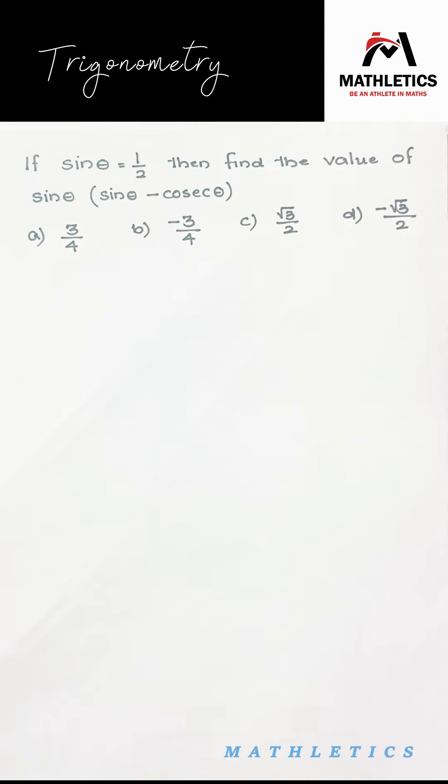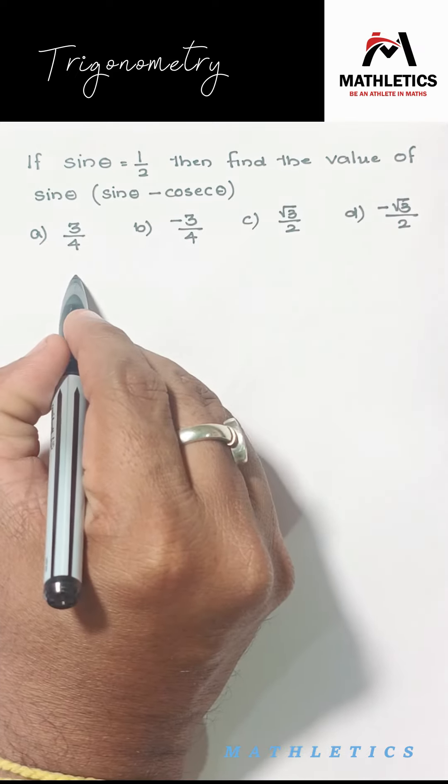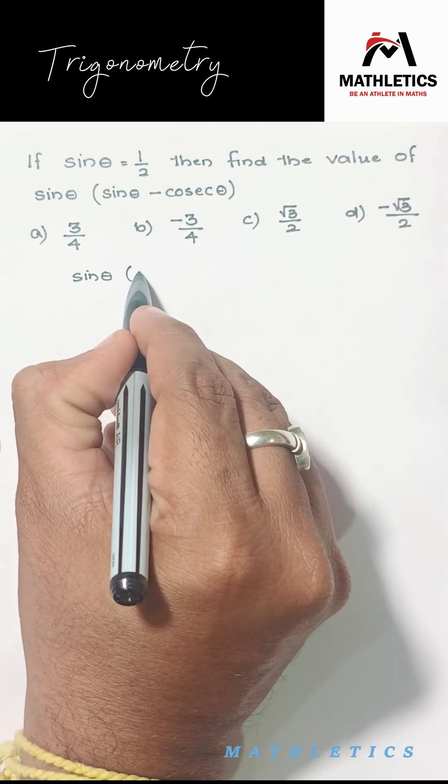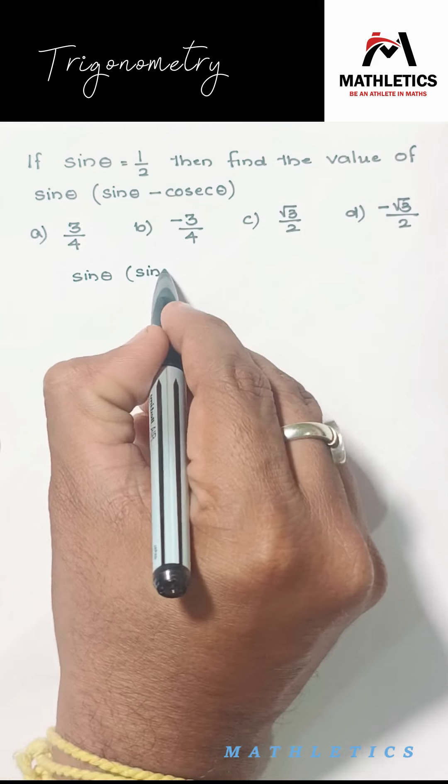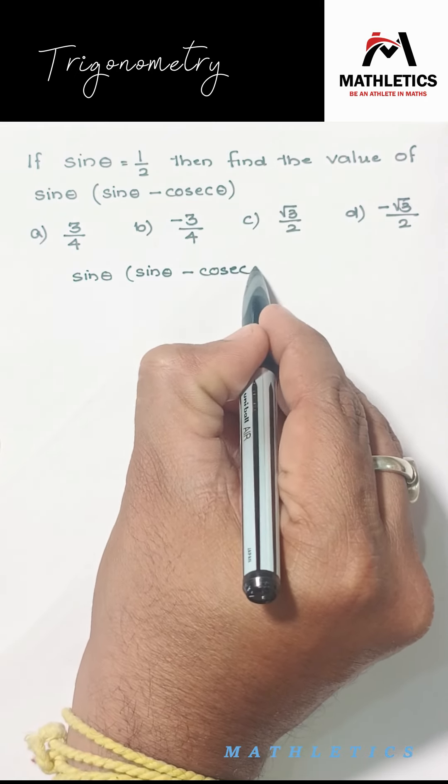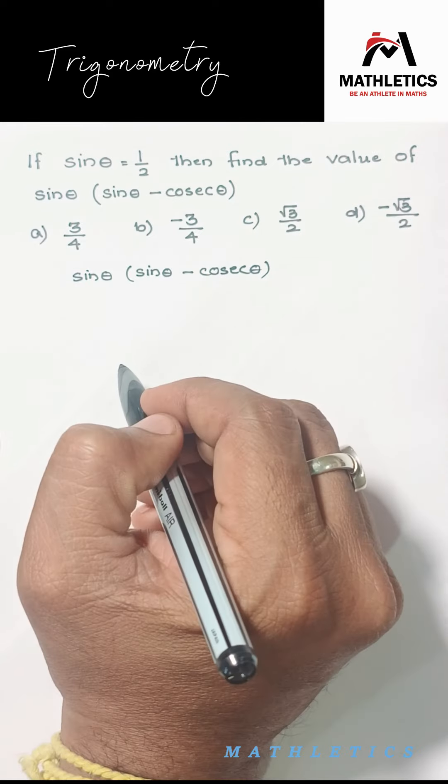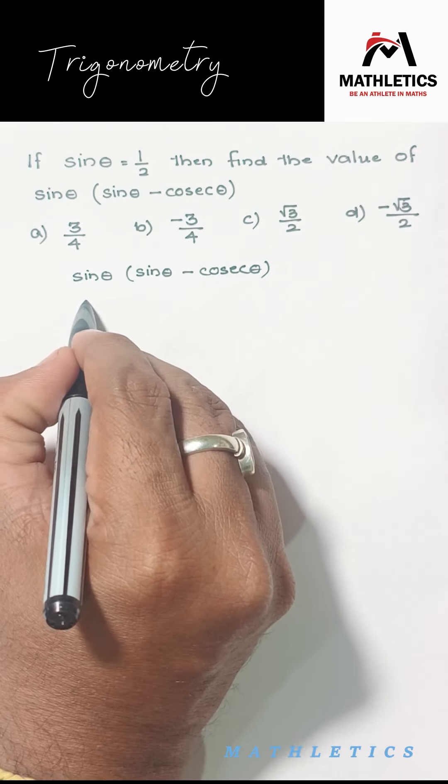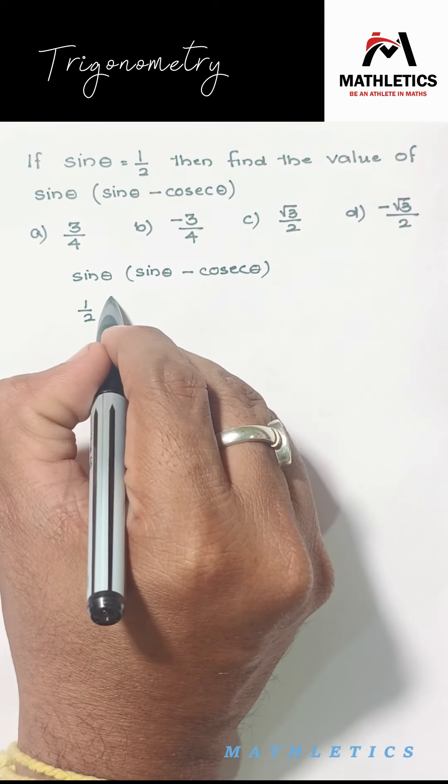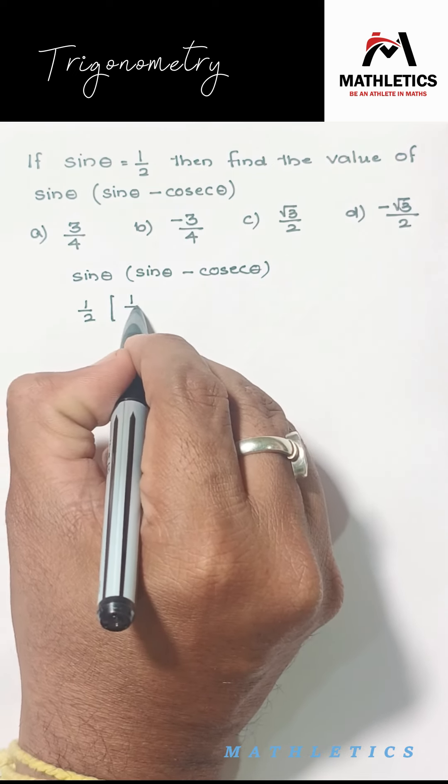Here, the value of sin θ is given as 1/2, so we need to substitute in the given equation. We want to calculate sin θ × (sin θ - cosec θ). The value of sin θ is 1/2, which is given, and we can calculate the value of cosec θ.